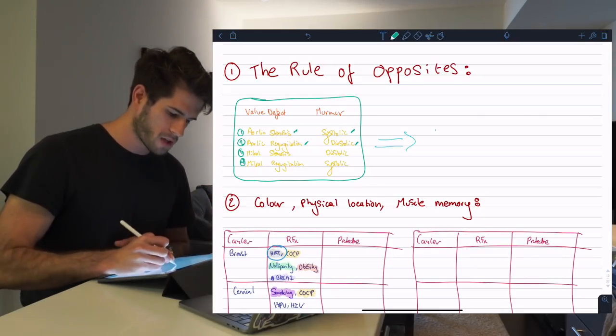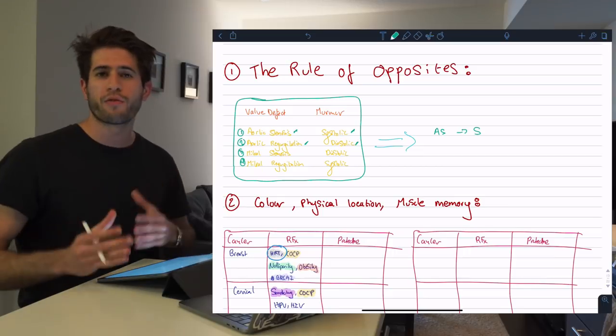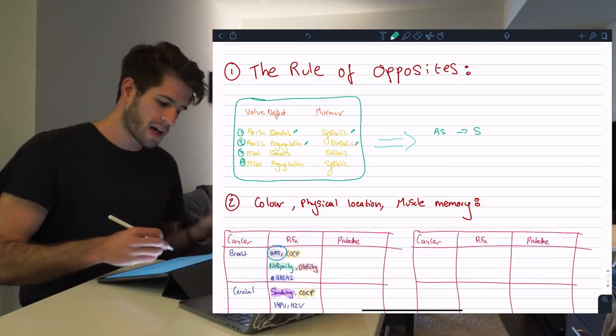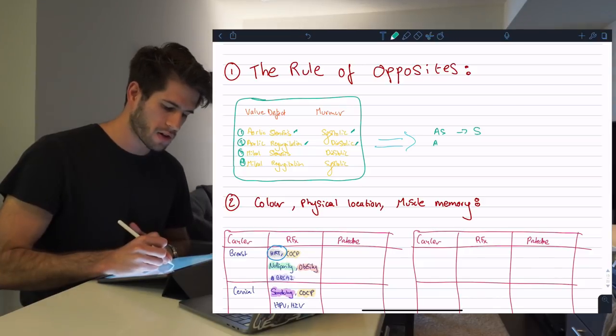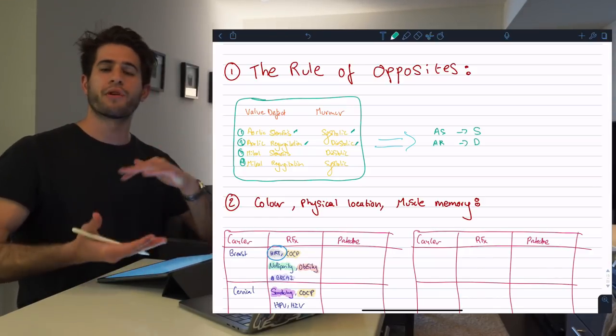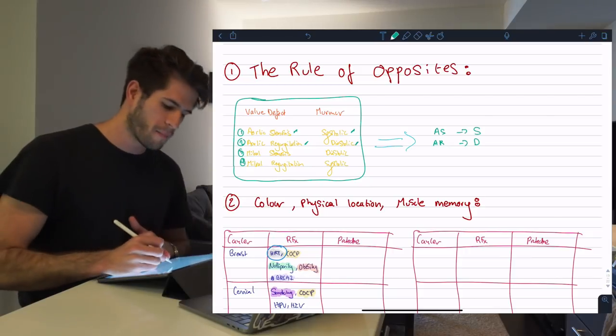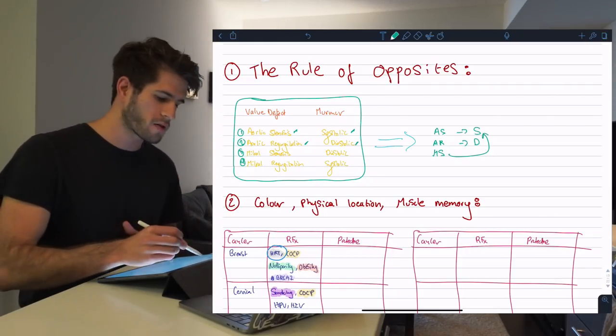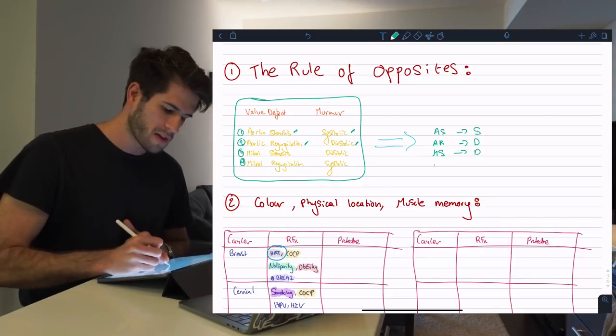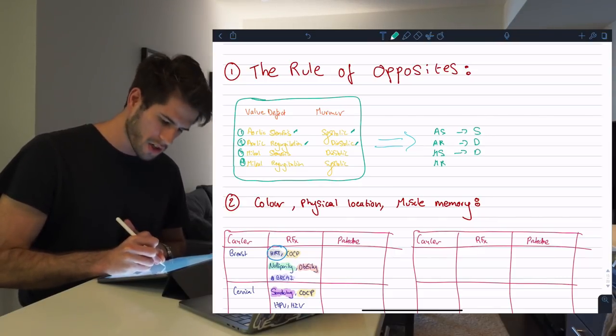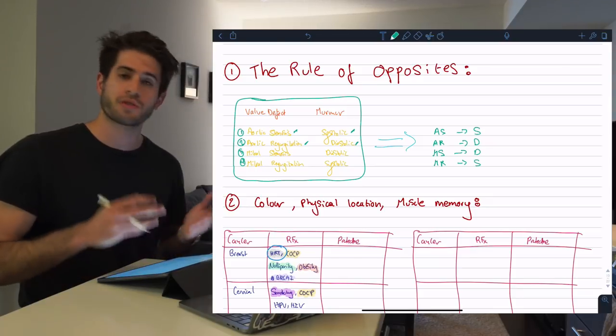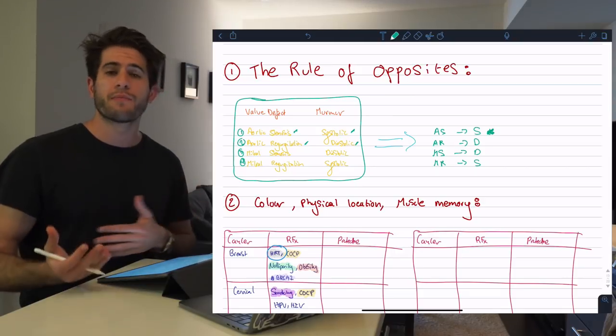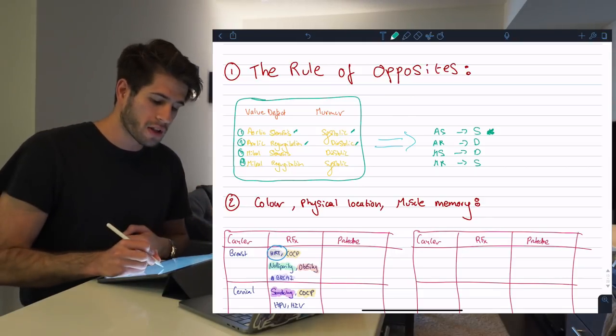Personally what I find easiest is that aortic stenosis occurs in systole and then just by remembering that one relationship you can figure out the other four. For example, aortic stenosis occurs in systole and I know for the aortic valve defects there's only one in systole and one in diastole, so aortic regurgitation must occur in diastole. Then if we reverse that and go to the opposite, mitral stenosis can't be systolic because we already used systolic for aortic stenosis. Just by remembering this first line we were easily able to remember and recall the other three lines.